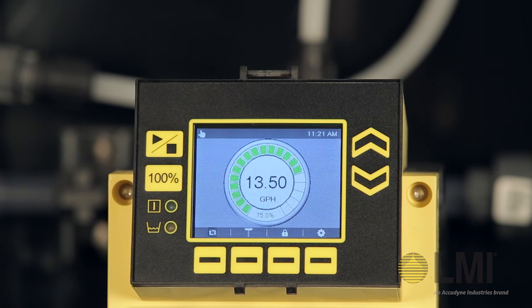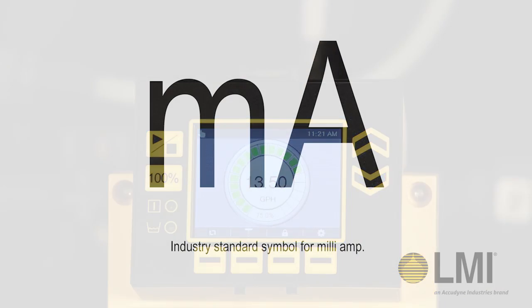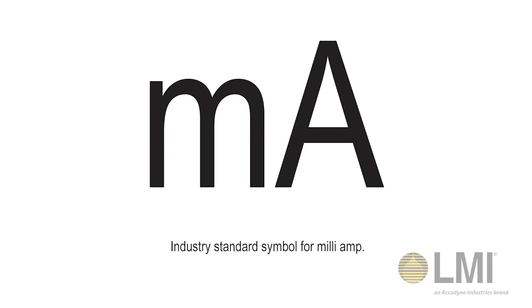determine its current operating mode by viewing the icon in the upper left corner of the notification bar. If the pump is already in analog mode, a milliamp icon will be visible in the notification bar.